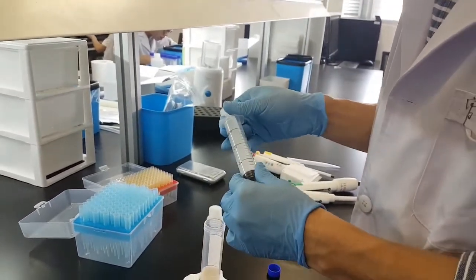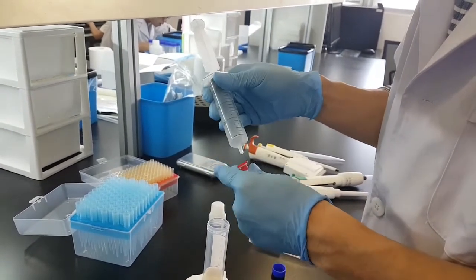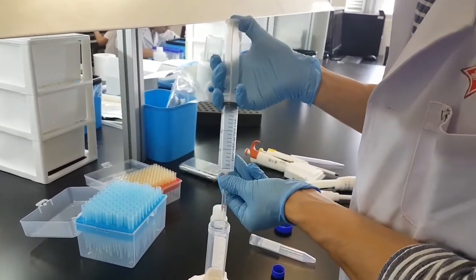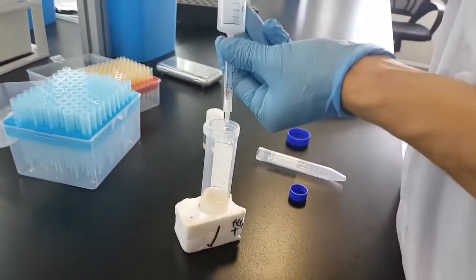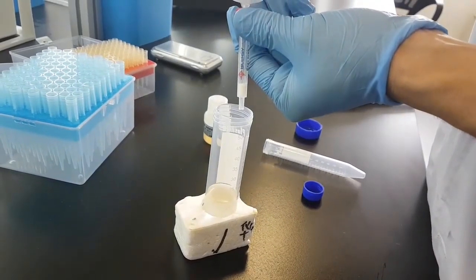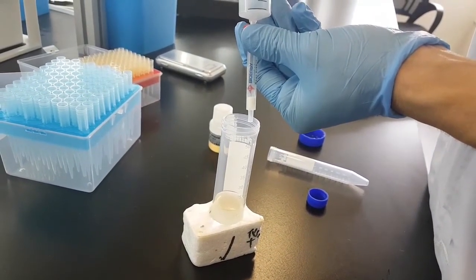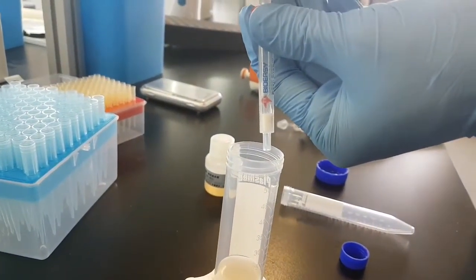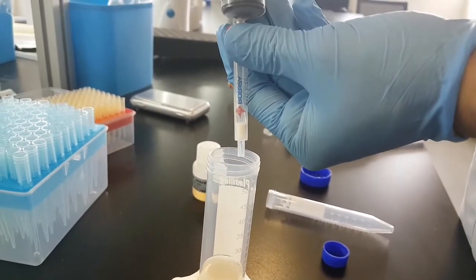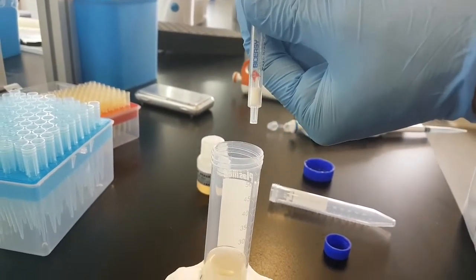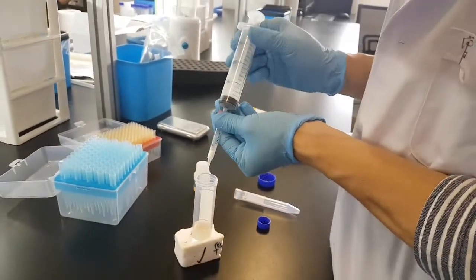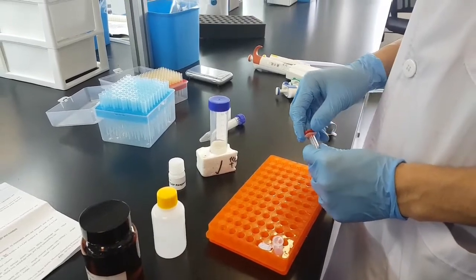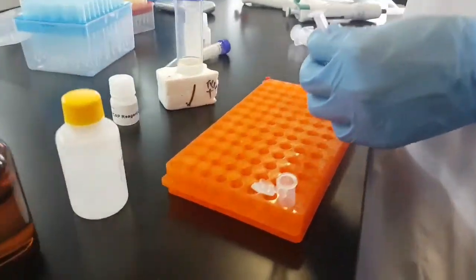Remove the extraction column. Take it out, connect once again the extraction column, and let the whole liquids flow. Disconnect.